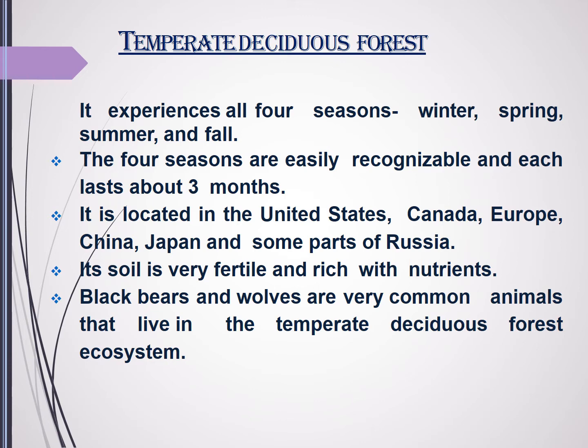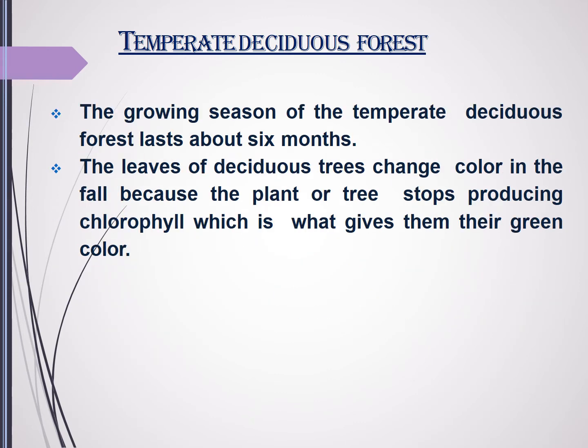Temperate deciduous forests have very fertile soil that is rich in nutrients. Animals commonly found here include black bears and wolves. The growing period in this forest lasts for six months, and there is a period of leaf fall when the tree color changes because the plant stops producing chlorophyll.